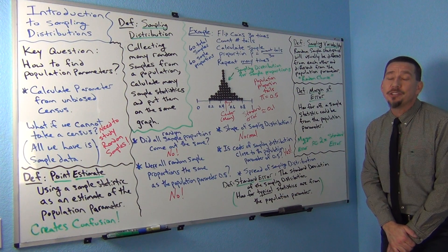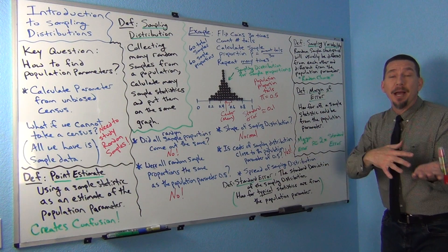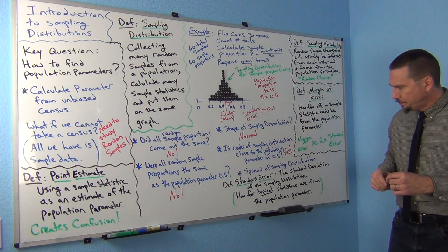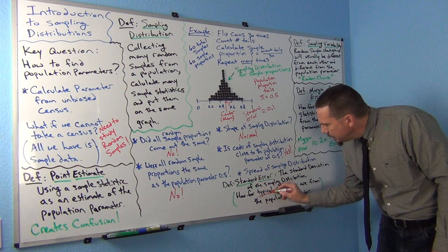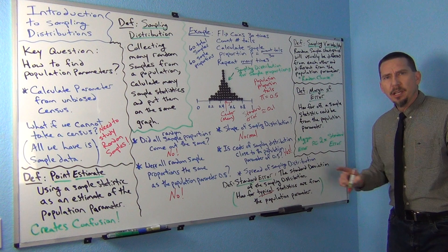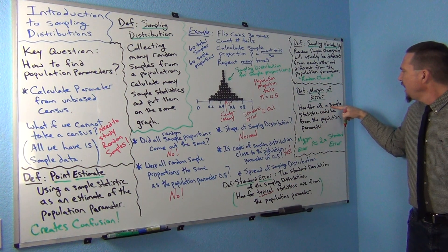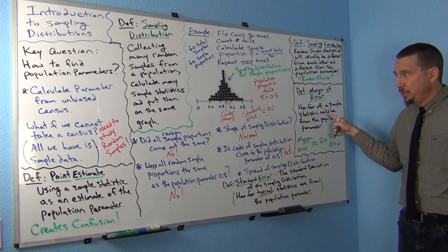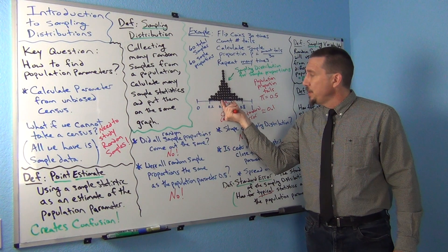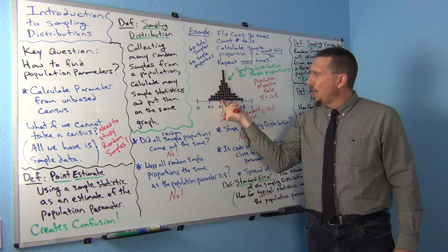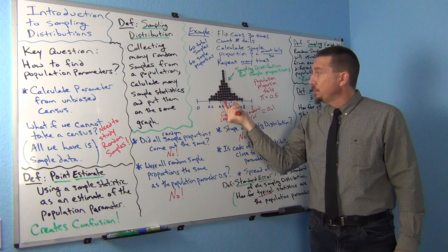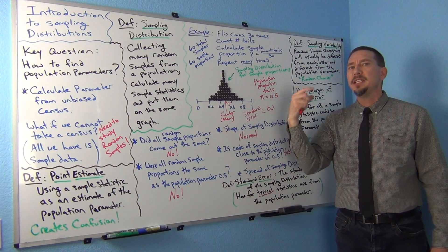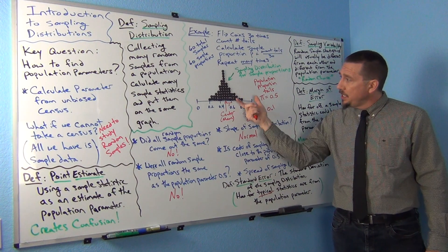That's exactly what we want to know — how far statistics are off from the population when I take a random sample. Keep in mind one key thing: standard error measures how far typical statistics are from the population parameter. Compare that to the margin of error definition: how far off could any sample statistic be from the population parameter? Standard error is only really measuring the middle 68% of the statistics — there are a lot of statistics beyond one standard deviation.